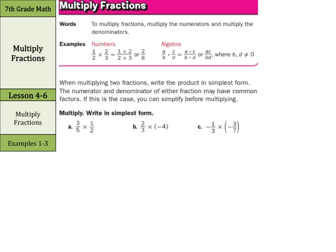Our concept today is multiplying fractions. To multiply fractions, multiply the numerators — the top part of the fraction — and multiply the denominators — the bottom part. So for one-half times two-thirds: one times two is two, two times three is six, and we simplify that to one-third. In variables, if we have a/b times c/d, we multiply a times c and b times d. Note: neither b nor d can be zero — we can't have a denominator of zero.